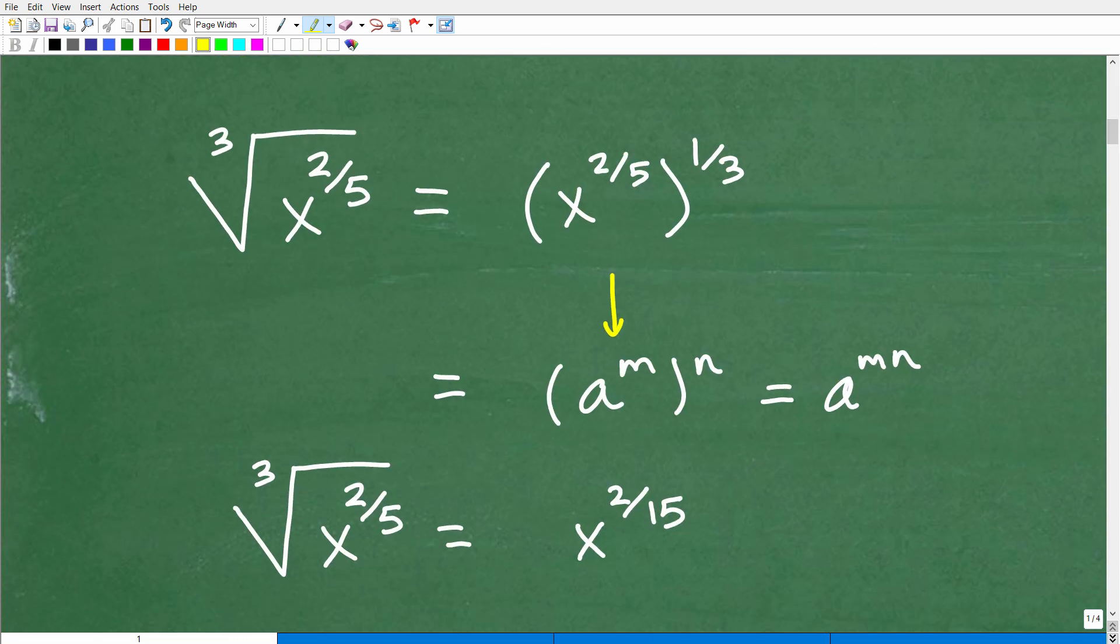Not difficult. So the cube root of x to the two fifth power, we can write this way. Okay, this would be x to the two fifth power, all of that to the one third power. Okay, because again, the cube root, anytime we have the cube root like that, we can write it as whatever is inside of here. Let's call that a box to the one third. All right. So we have x to the two fifth power to the one third.